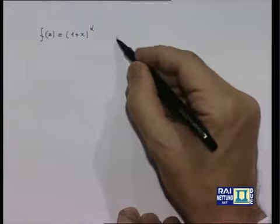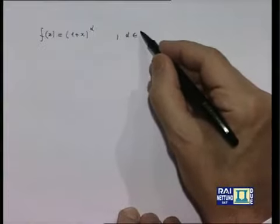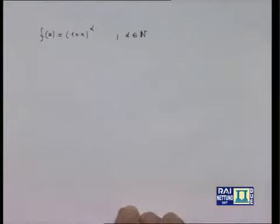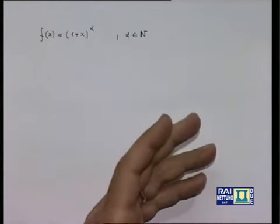Innanzitutto è chiaro che se alfa è un numero naturale, non c'è alcun bisogno di sviluppo, perché (1 + x) elevato alla n è la potenza ennesima del binomio, che possiamo scrivere sotto forma di polinomio usando la formula del binomio, di cui ci siamo occupati nella prima o seconda lezione.